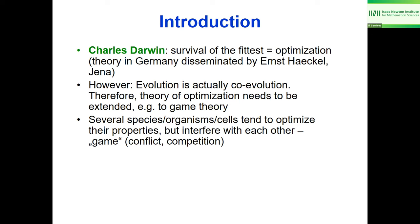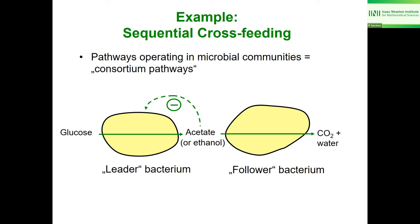Sometimes the theory of optimization needs to be extended to game theory, because organisms interfere with each other. Therefore, sometimes the optimal state cannot be reached because the other organism also wants to optimize its properties, and in some cases both of them don't reach the optimum due to conflict or competition.